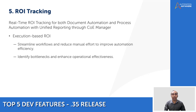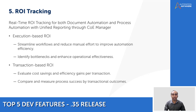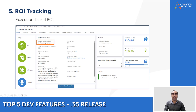With transaction-based ROI, you can evaluate cost savings and efficiency gains on a per-transaction level, making it easy to compare and measure success based on the outcomes of each transaction. Execution-based ROI measures returns based on successful automation executions — it tracks run counts over time like a week, month, or quarter, and provides details like success and failure rates and duration.